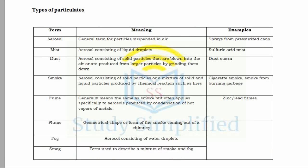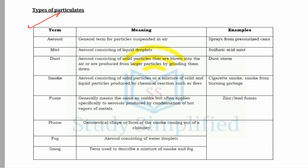Particulate matters are dispersed into the atmosphere. Aerosol is the general term for particles suspended in the air — for example, sprays from pressurized cans. Mist is an aerosol consisting of liquid droplets, such as sulfuric acid mist. Dust is an aerosol containing solid particles blown into the air by grinding, such as in dust storms. Smoke is an aerosol consisting of solid particles or a mixture of solid and liquid particles produced by chemical reactions such as fires and burning garbage.